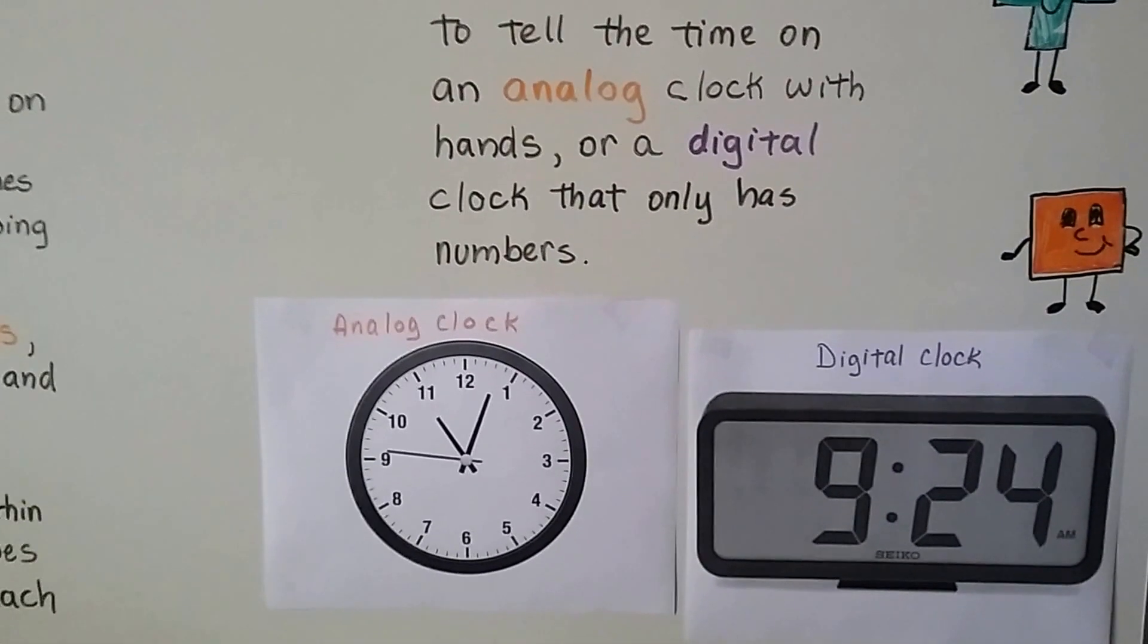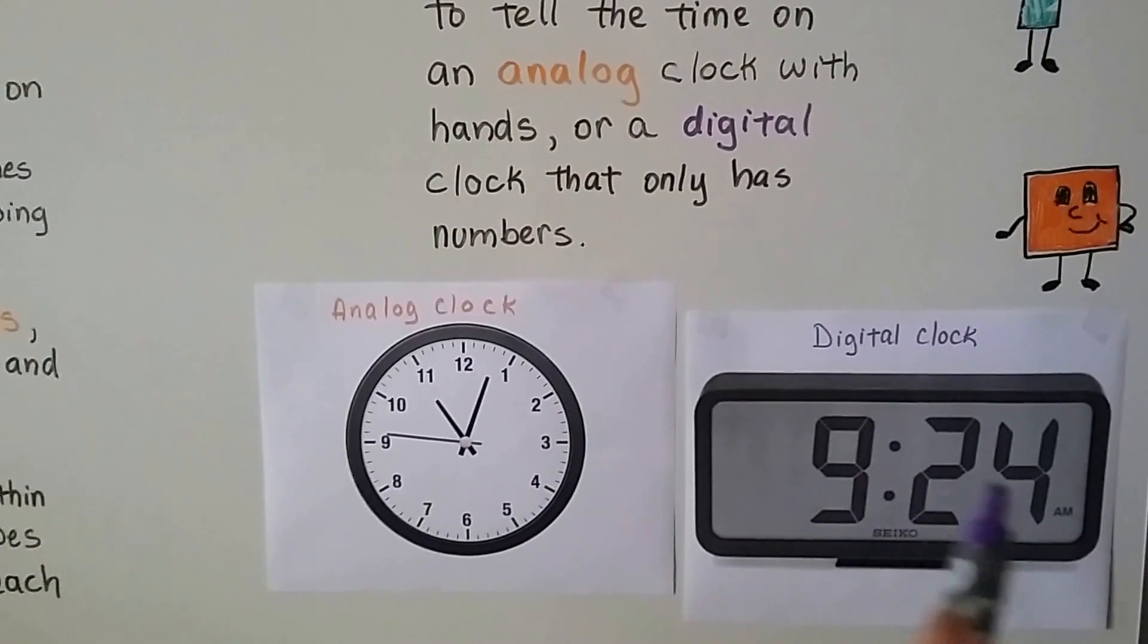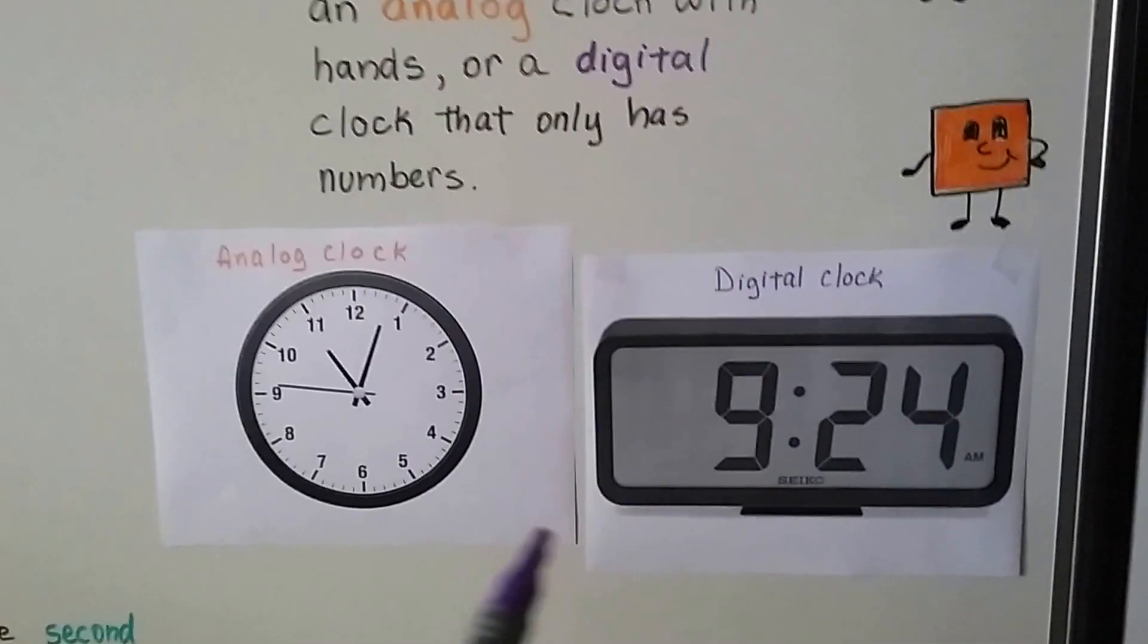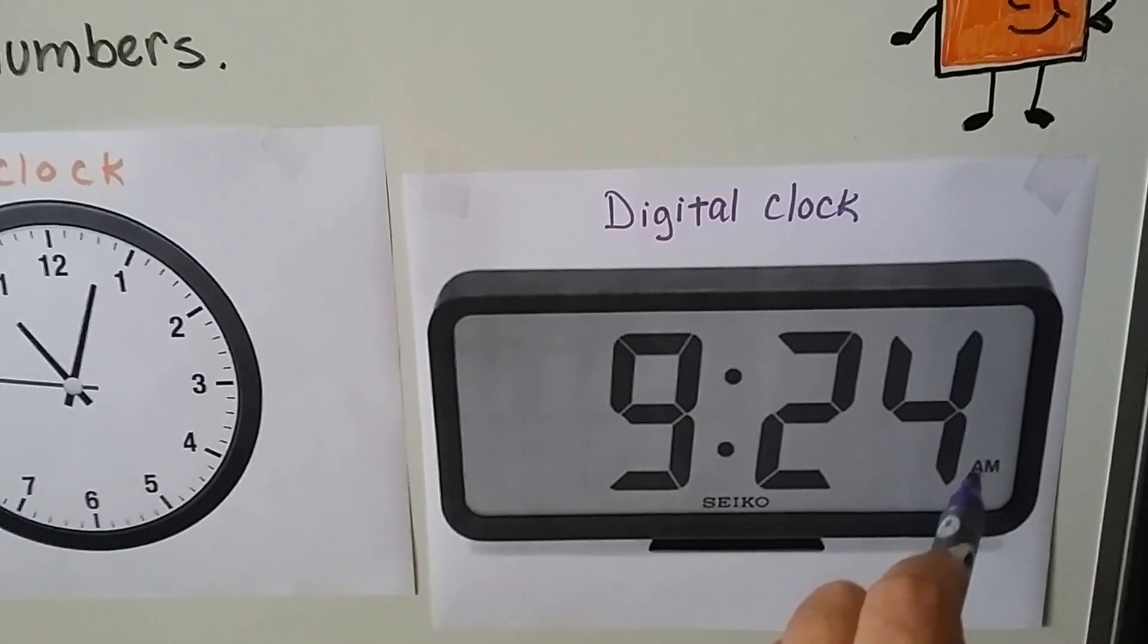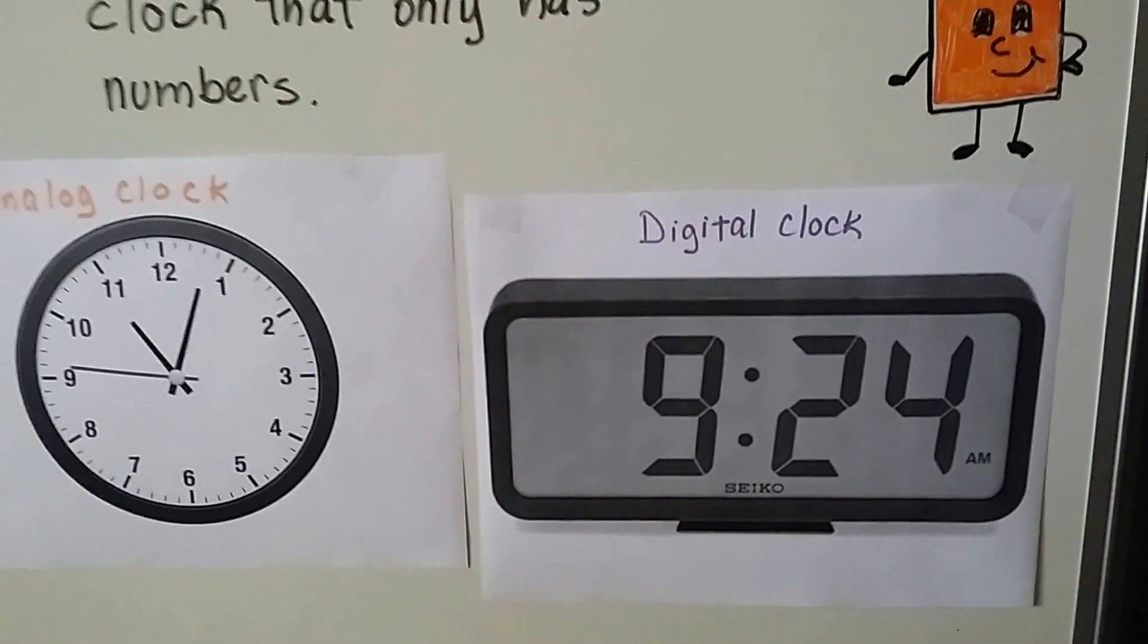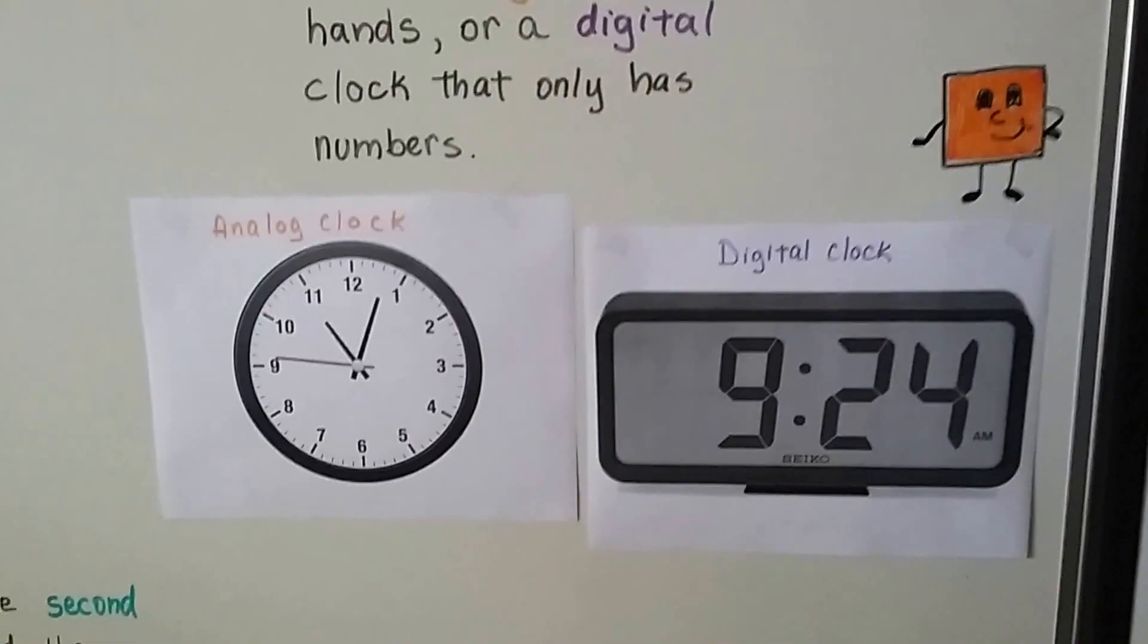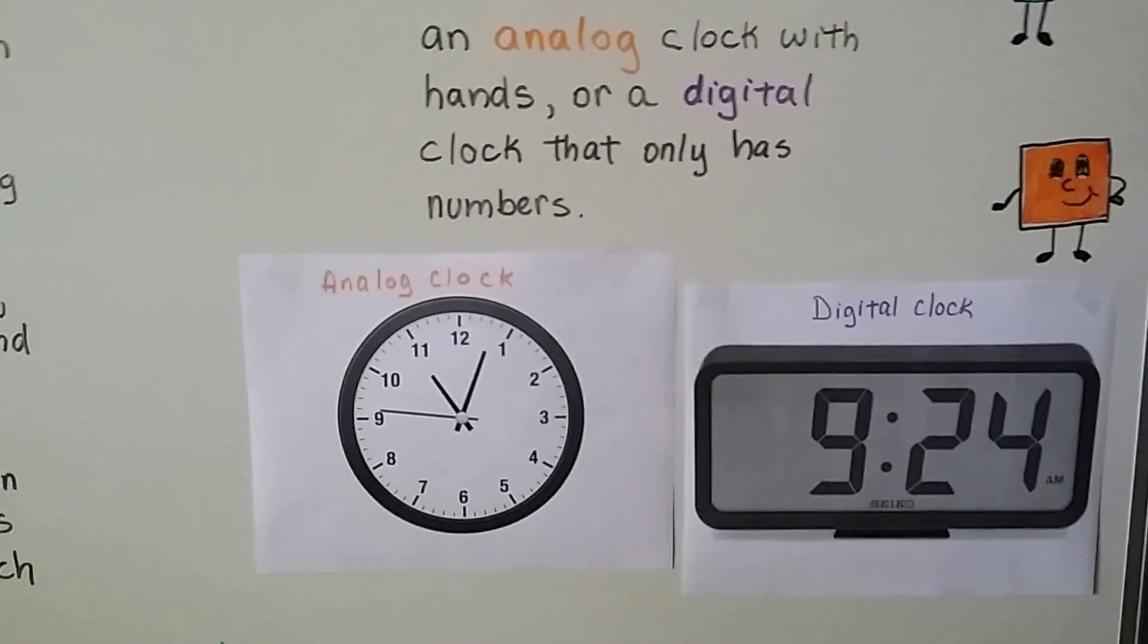And that's a digital clock. It just shows you the numbers. See? And you can see down here the little word, the little letters AM. That stands for morning. And PM would be evening, and we're going to talk about that too.